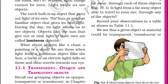A torch bulb is an object that gives out light of its own. There is a battery installed within the torch. The electrical energy is converted into light energy. One more example — the Sun. The Sun is another familiar object that gives its own light. There will be so many nuclear reactions happening within the Sun, and some part of that energy we perceive as light energy.